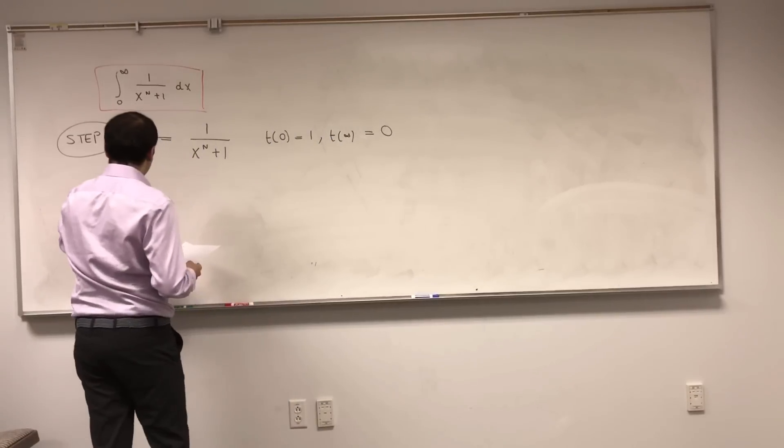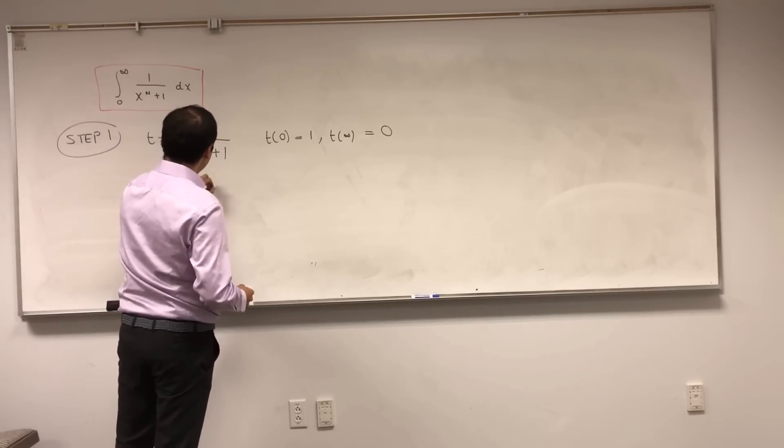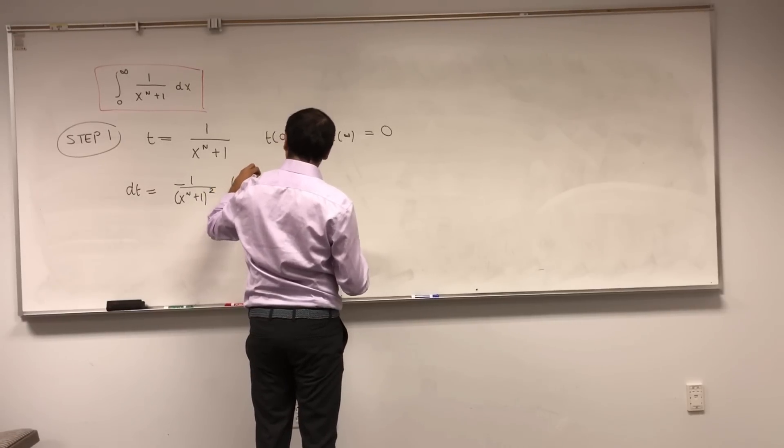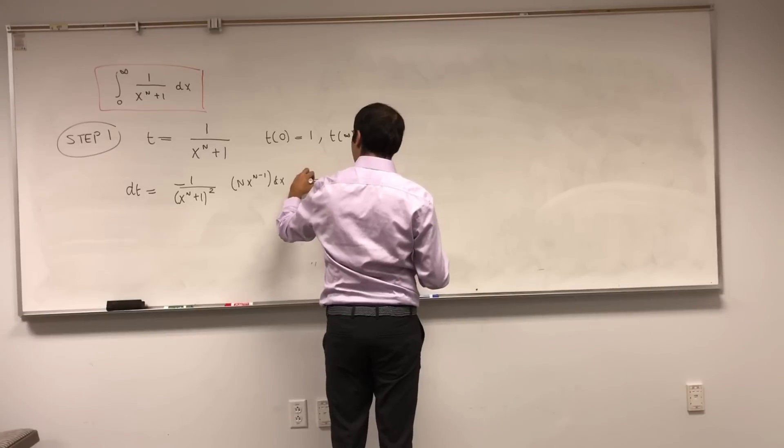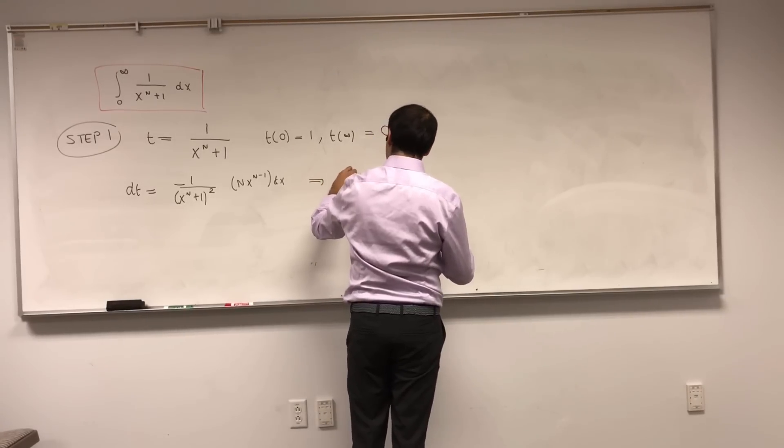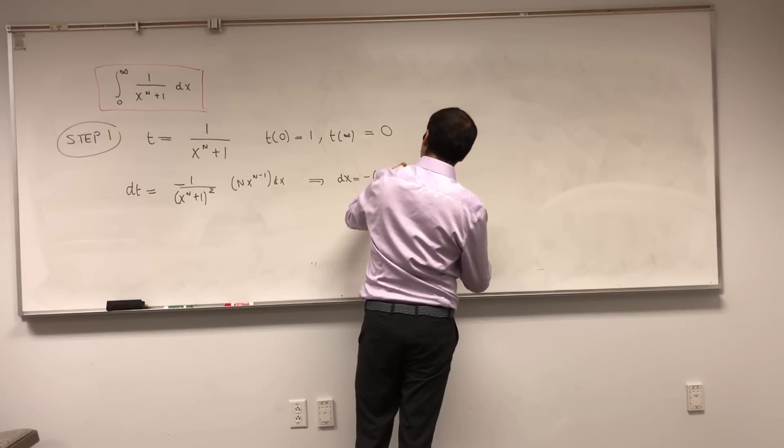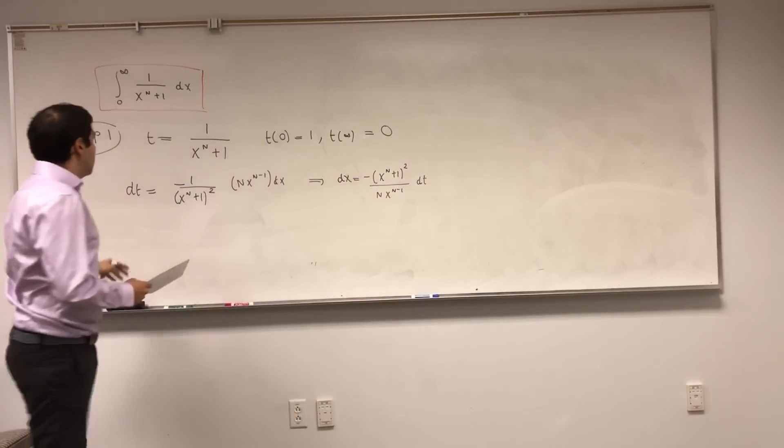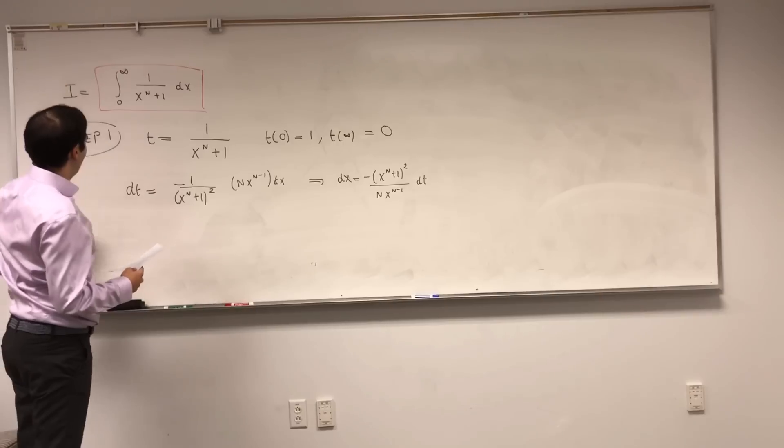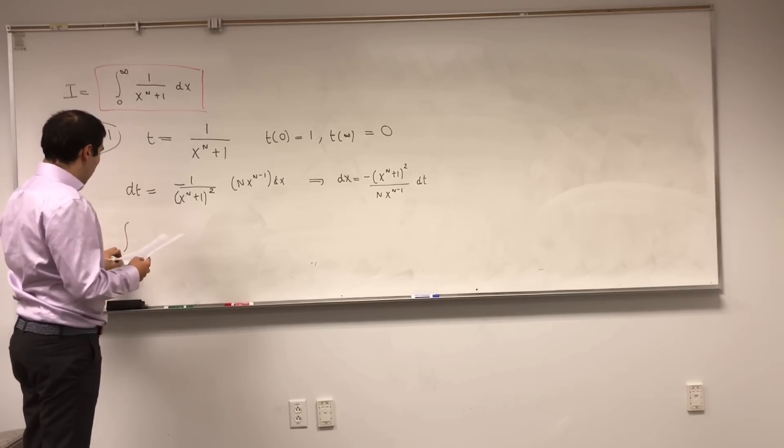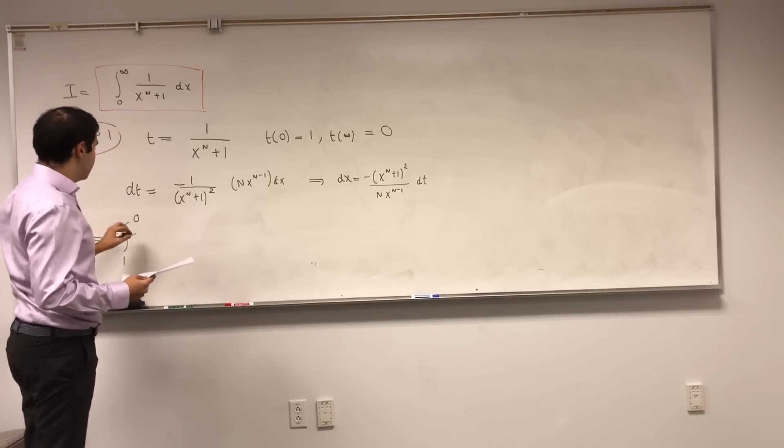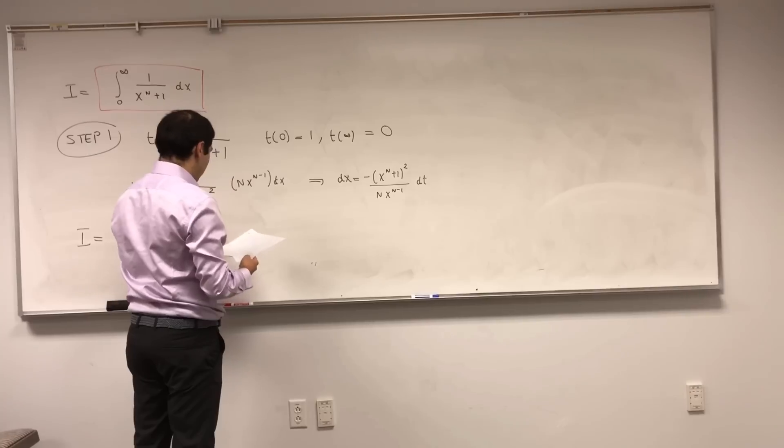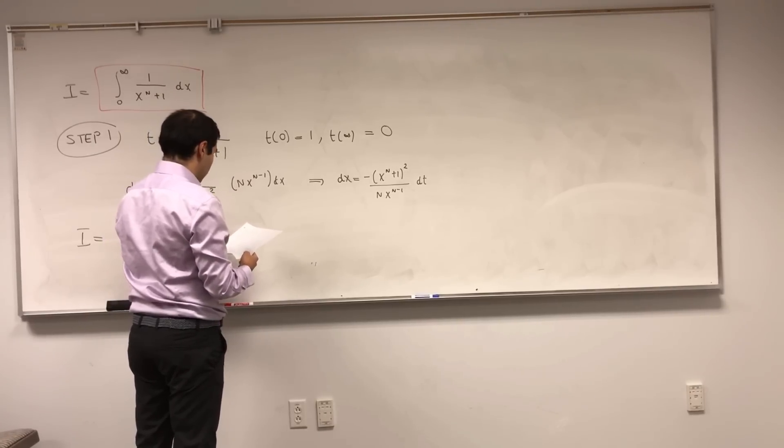And then dt, using chain rule, is minus 1 over that junk squared times n x to the n minus 1 dx. So dx is minus x to the n plus 1 squared over n x to the n minus 1 dt. Which tells us that this integral, let's call it I, becomes the integral from 1 to 0 of t times dx, which is minus x to the n plus 1 squared over n x to the n minus 1 dt.